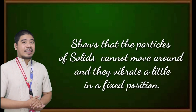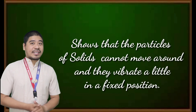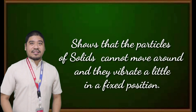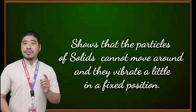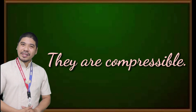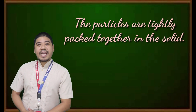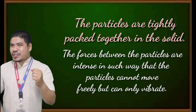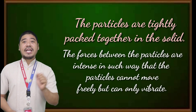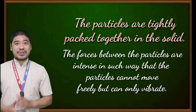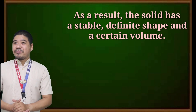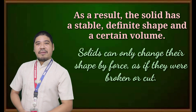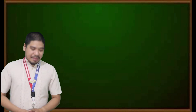The particulate model of matter shows that the particles of solids cannot move around and they vibrate a little in fixed position — they are incompressible. Particles are tightly packed together in the solid. The forces between the particles are intense in such a way that the particles cannot move freely but can only vibrate. As a result, the solid has a stable, definite shape, and a certain volume. Solids can only change their shape by force, as if they were broken or cracked.